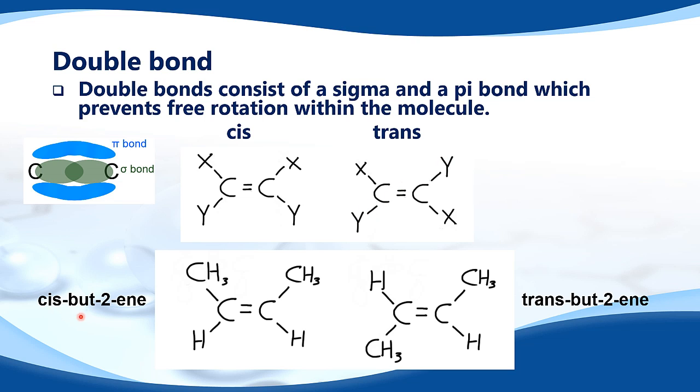Here we have cis-but-2-ene which has the CH3 groups on the same side of the double bond. And on this side we have trans-but-2-ene which has the CH3 groups on opposite sides of the double bond.